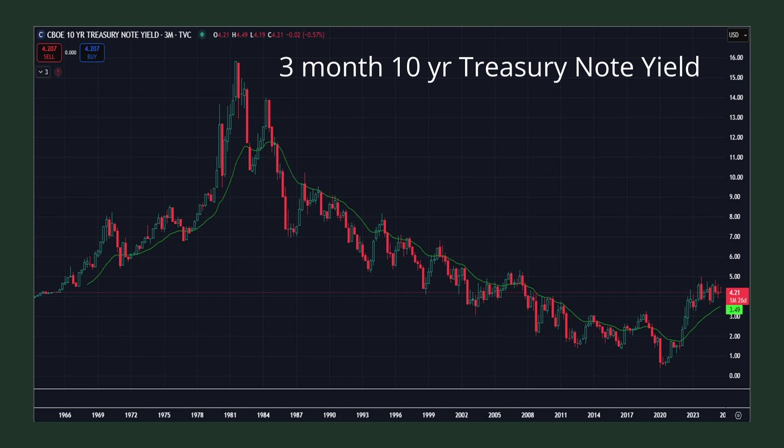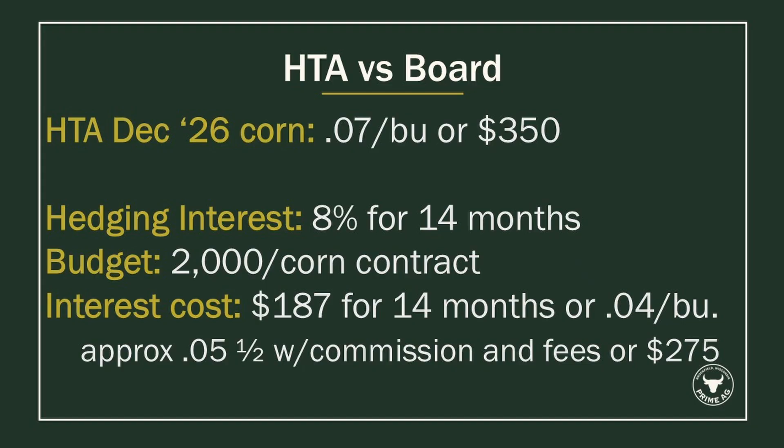Given some recent data and economic uncertainty, I think the lean is more to the lower side on rates. As we get into our example, we want to look at HTA fees compared to the interest cost if you were to hedge using the board. We've been talking with some producers about beginning to hedge bushels for the December 2026 contract, and what we're hearing is somewhere between six and eight cents for an HTA fee that far out.